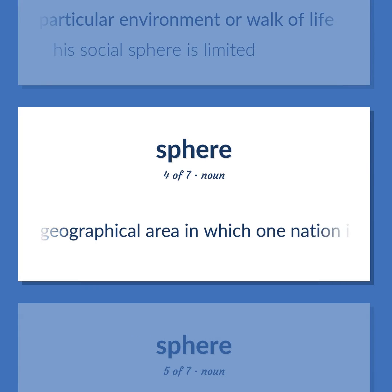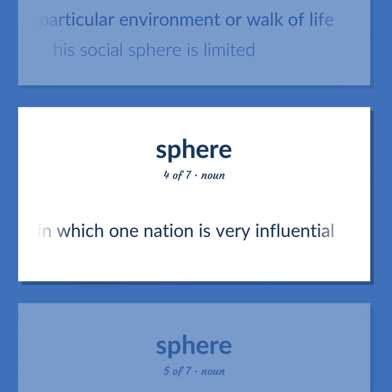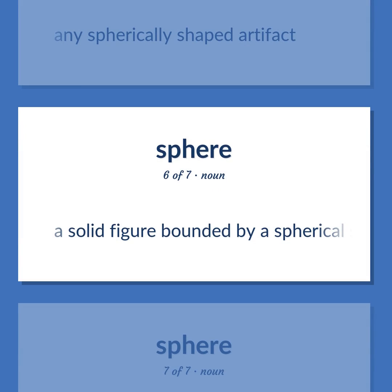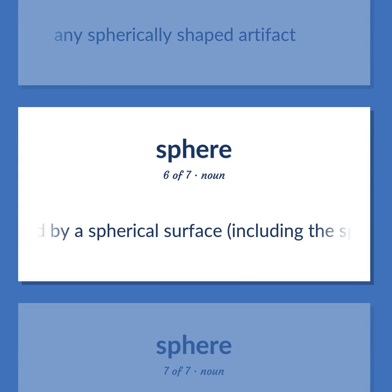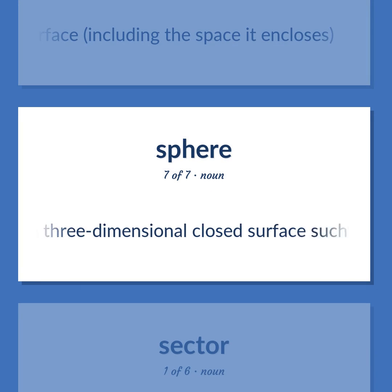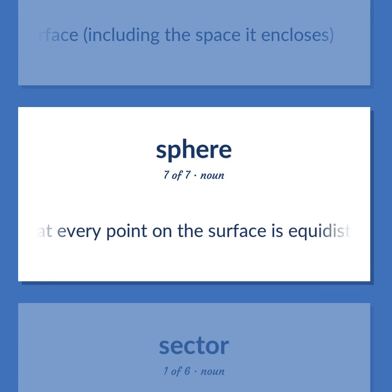Sphere: the geographical area in which one nation is very influential. Any spherically shaped artifact. A solid figure bounded by a spherical surface, including the space it encloses. A three-dimensional closed surface such that every point on the surface is equidistant from the center.